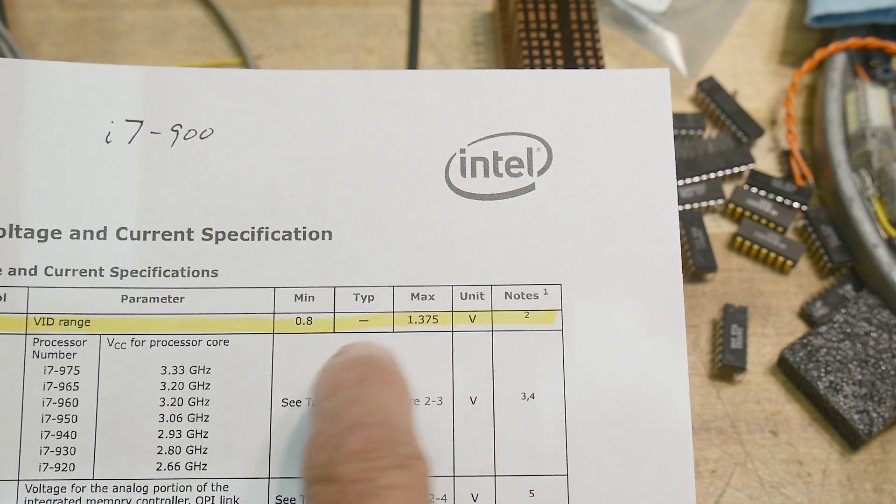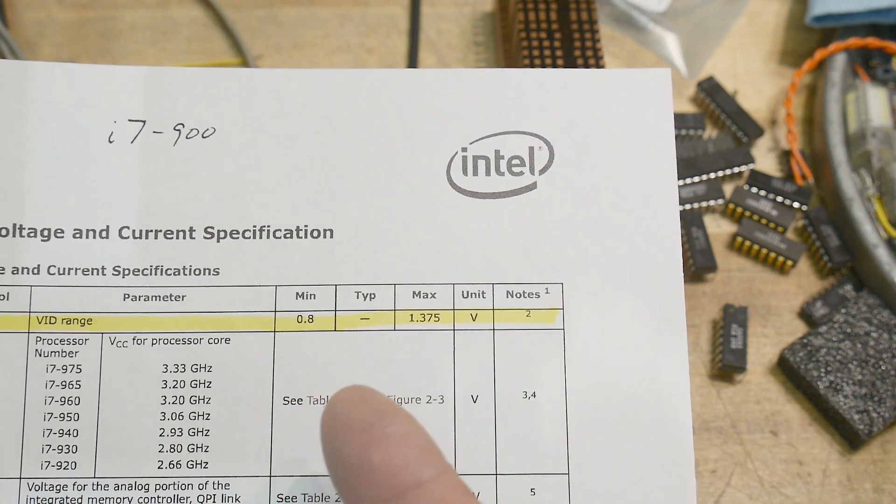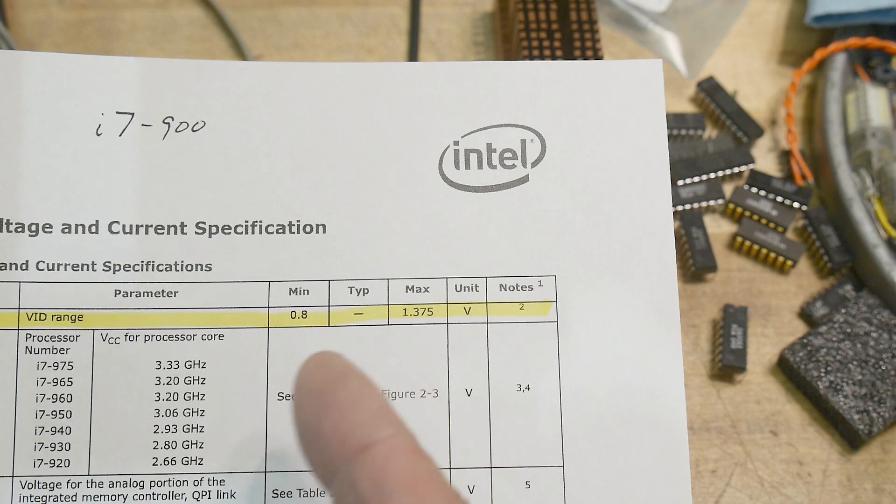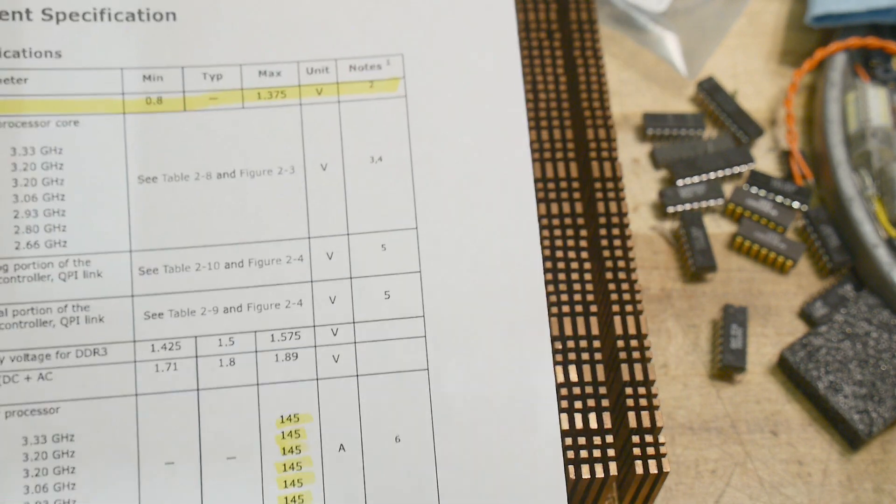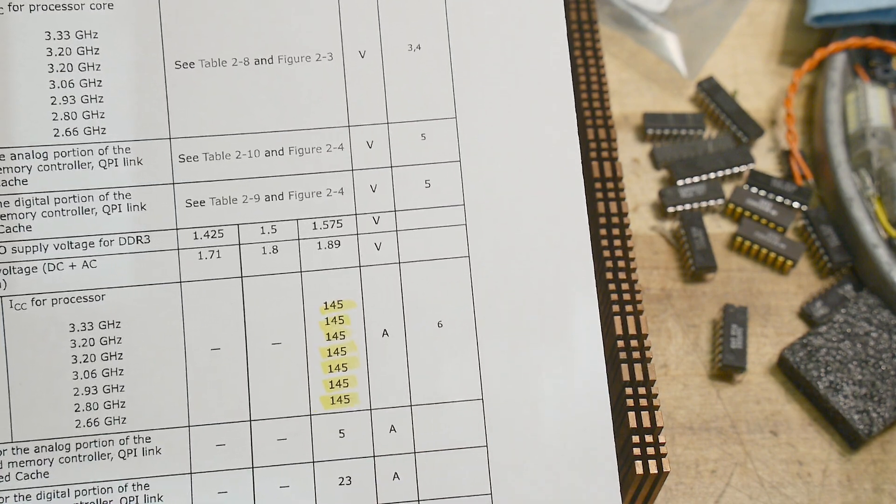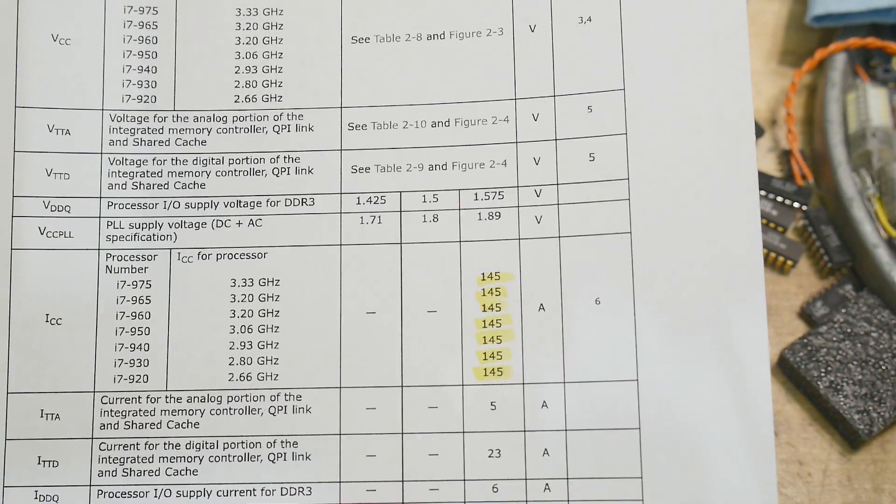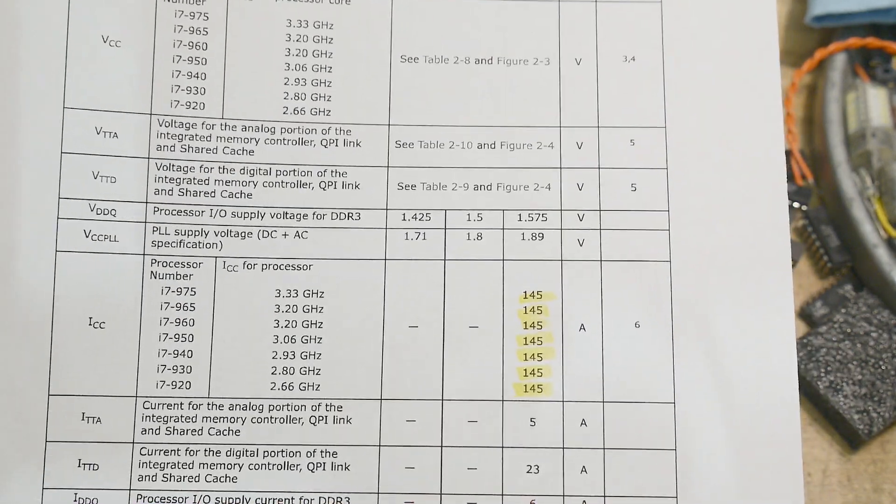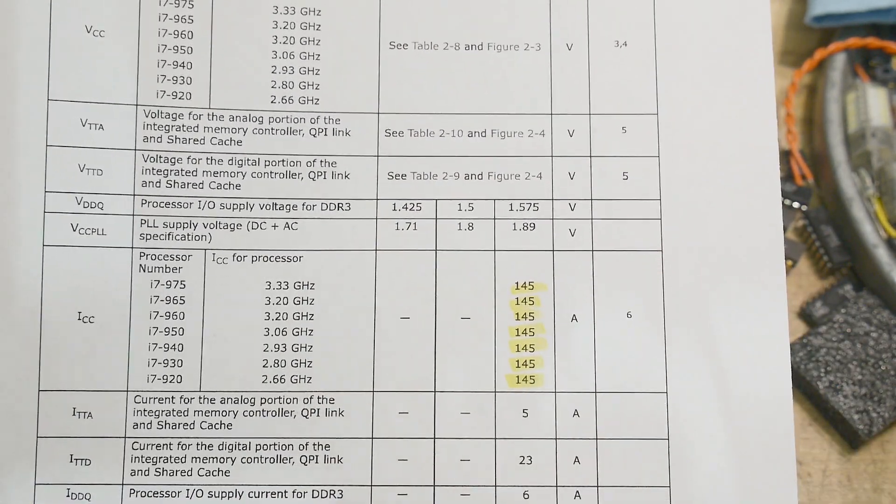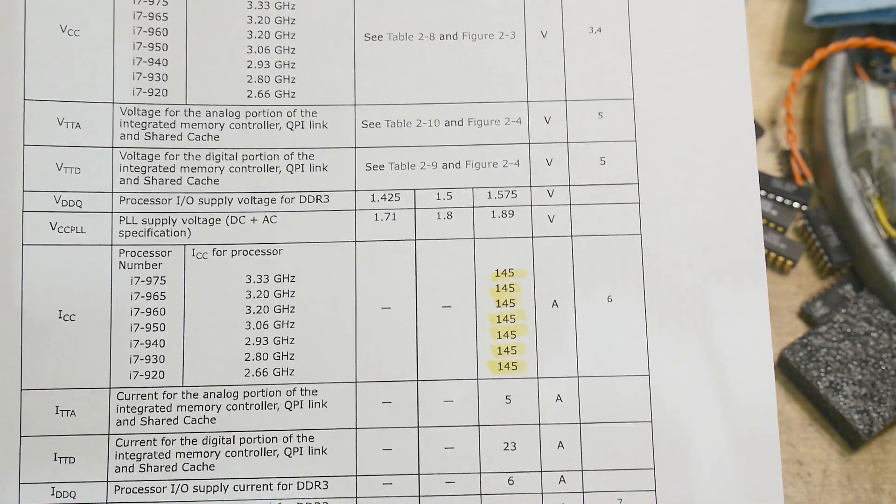So 1 volt. So if it's just operating at 1 volt, it must operate really, really cool, right? You know, that's not much power. Well, you look down here, it's 1 volt at 145 amps. Yeah, that's right. 145 amps. So if you take 1 volt and multiply it by 145 amps, that's 145 watts. And that's why they get hot.